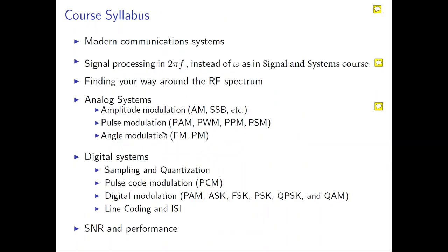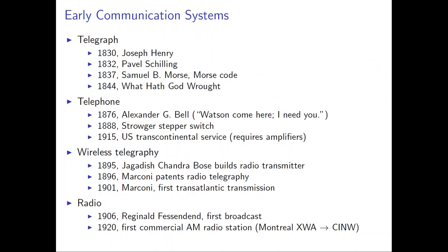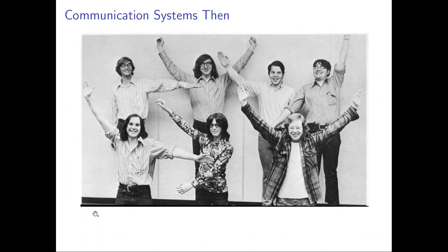This is the overall structure of the course. Going back to the history of communication: real communication using frequency and modulation started in 1830 with the telegraph, then other versions, then the telephone — Alexander Graham Bell — then wireless telegraphy in 1895.